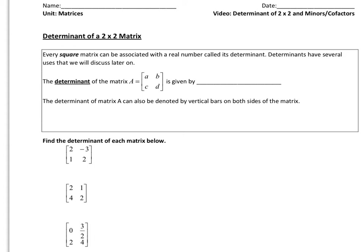Hi everyone. In today's lesson we're going to talk about how to find the determinant of a 2x2 matrix and how to find the minors and the cofactors. Every square matrix can be associated with a real number called its determinant. Determinants have several uses that we will discuss later on. The determinant of a square matrix with entries A, B, C, D is given by AD minus CB.